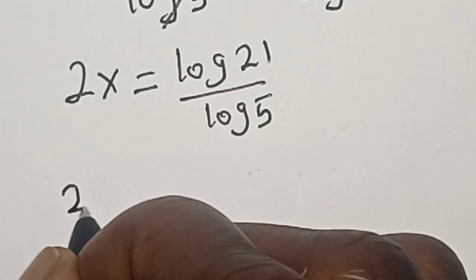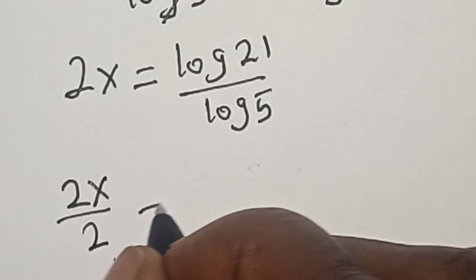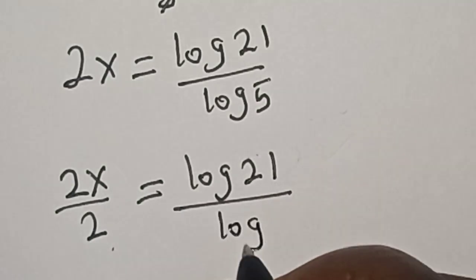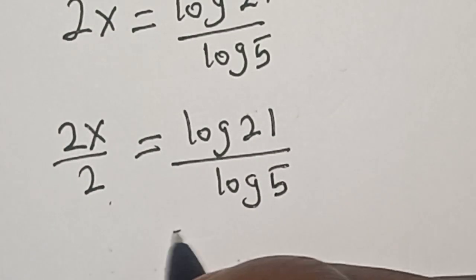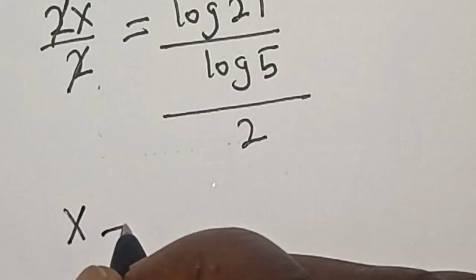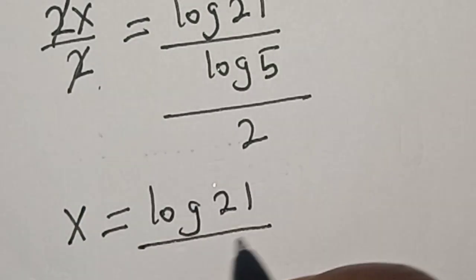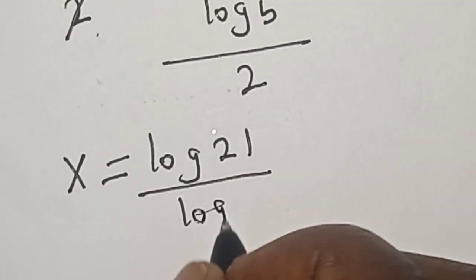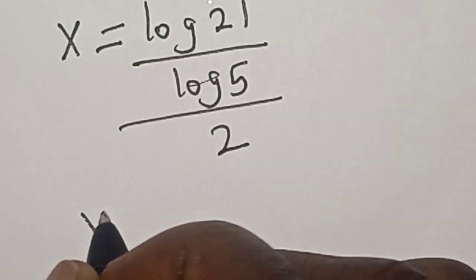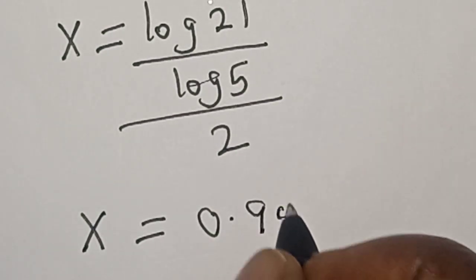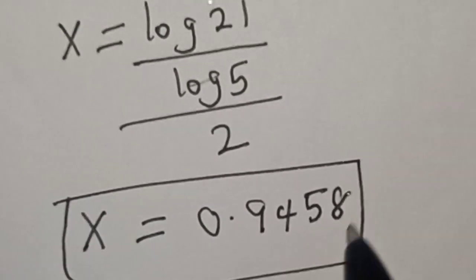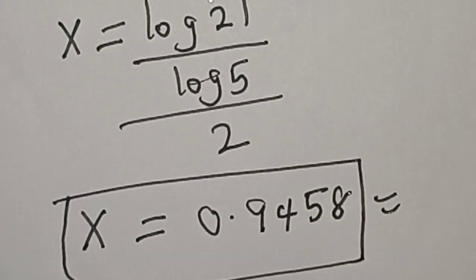not the value of 2s, meaning that we are going to divide both sides by 2. We have 2s divided by 2 is equal to log 21 over log 5, divided by 2. And if you press your calculator, s is equal to 0.9458. That is our final answer. Please don't forget to like, share, comment, and subscribe. Thank you.